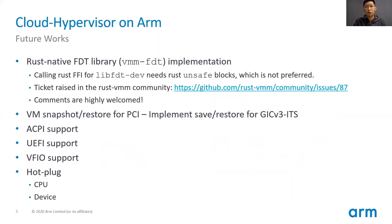Future work on the ARM platform includes code redesign and feature parity on AArch64. Currently, the code to generate FDT is based on a Rust foreign function interface which depends on a C library. Calling a Rust FFI for C functions requires Rust unsafe blocks, which is not preferred. To address this, both the Cloud Hypervisor and RustVMM communities have suggested implementing a dedicated FDT crate in Rust, and design comments are welcome on the GitHub issue. Feature parity on AArch64 includes improvement of VM snapshot/restore support — specifically save/restore for GICv3 ITS — as well as other features such as ACPI, UEFI, VFIO, and CPU/device hotplug support.